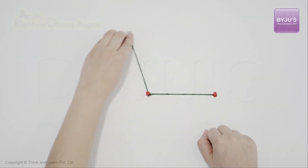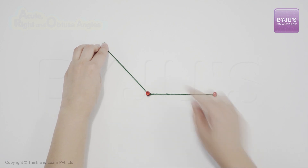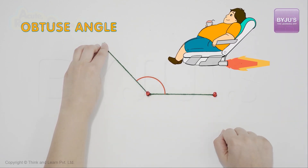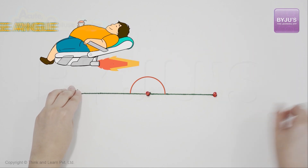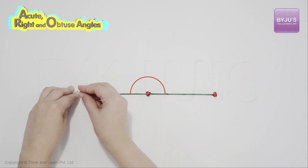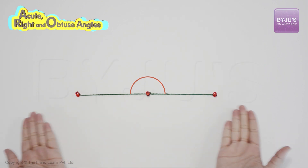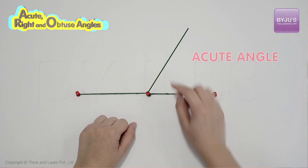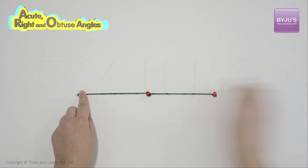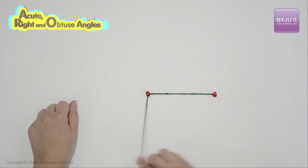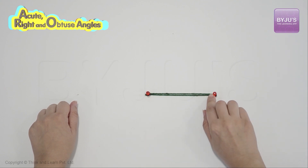If I move it a little bit more all the way, it's called an obtuse angle. The angle will get more and more obtuse till the line is horizontal again. If it's small it's acute, and if it's not it's obtuse. If it's not acute or right, it's obtuse.